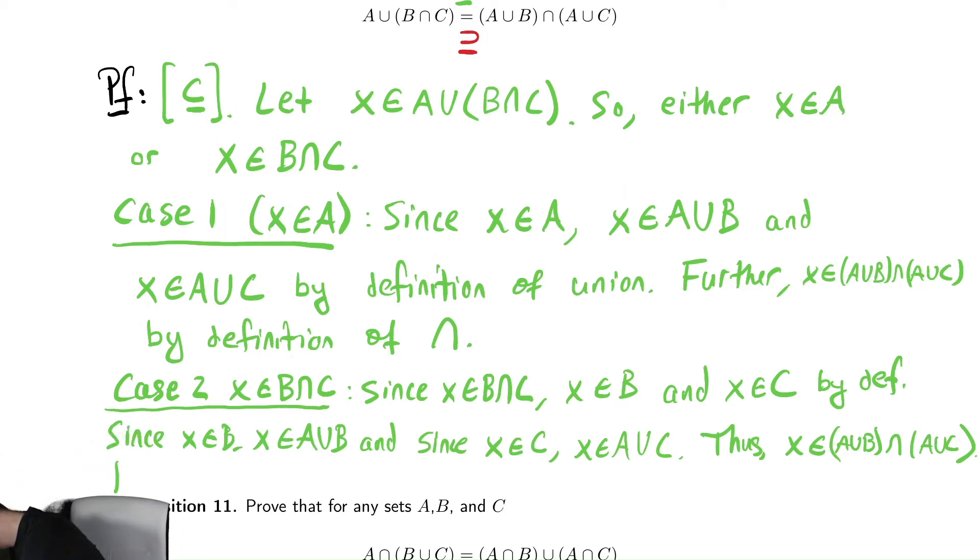Therefore, because we covered all possible options, it was in that set, and regardless of what we did, we know that x is in that set, A union B intersect A union C.